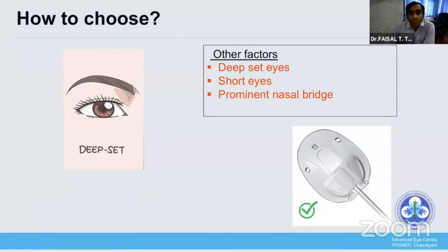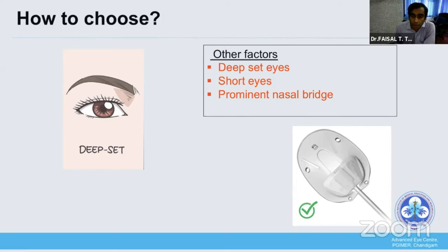Other patient factors include deep-set eyes, short eyes, or prominent nasal bridge. In these patients, it is very difficult to place a large non-valve device, and one may consider a smaller valved device like the AGV.